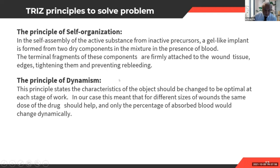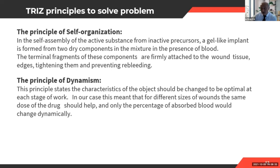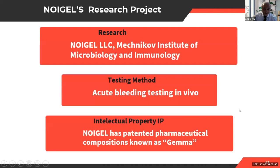The principle of dynamism states that the object's characteristics should change to be optimal at each stage of operation. In our case, the same dose of powder should help for different sizes of wounds — only the percentage of blood absorbed changes dynamically. It works like a sponge: the same amount of powder absorbs different amounts of blood depending on the bleed. That's the dynamicity principle applied here.